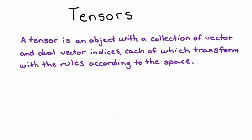We've finally reached the point in this tutorial where we can begin to talk about tensors. So what exactly is a tensor? A tensor is an object with a collection of vector and dual vector indices, each of which transform with the rules according to the space.